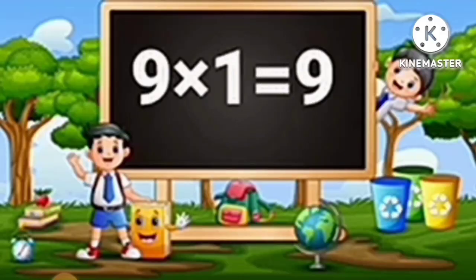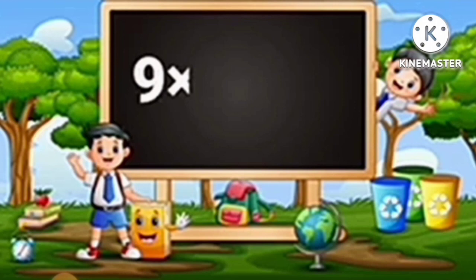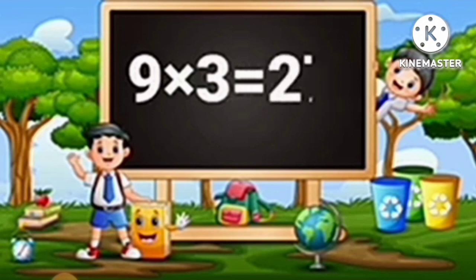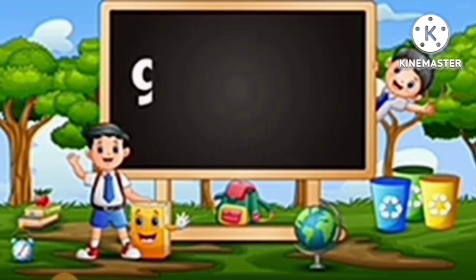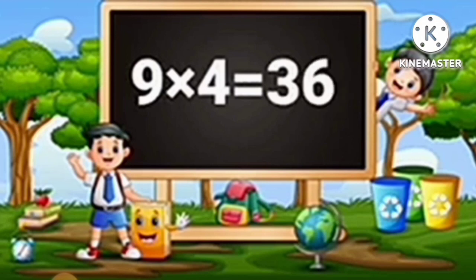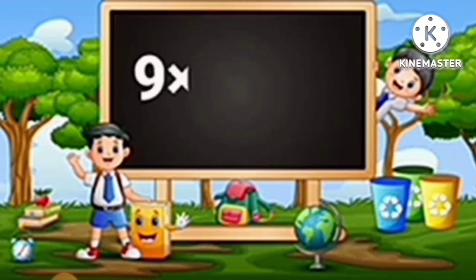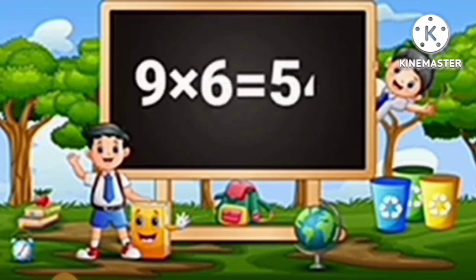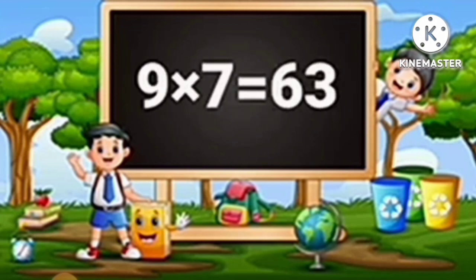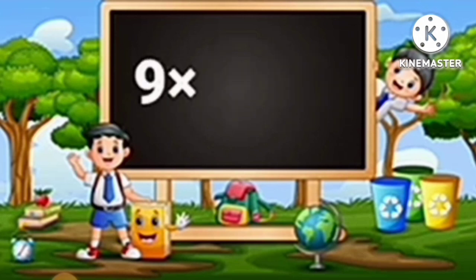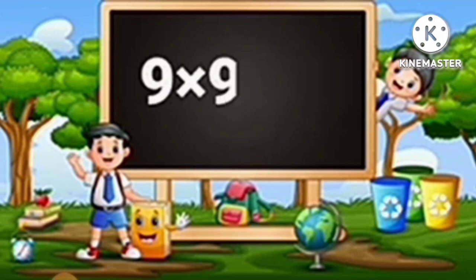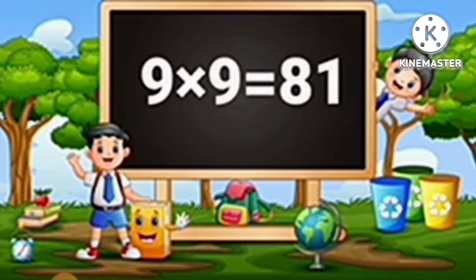Table of 9: 9 ones are 9, 9 twos are 18, 9 threes are 27, 9 fours are 36, 9 fives are 45, 9 sixes are 54, 9 sevens are 63, 9 eights are 72, 9 nines are 81.